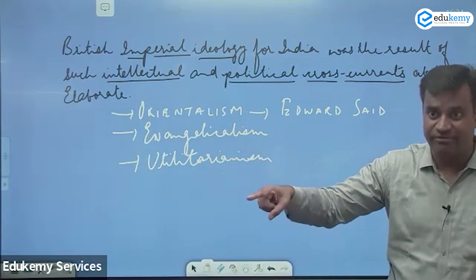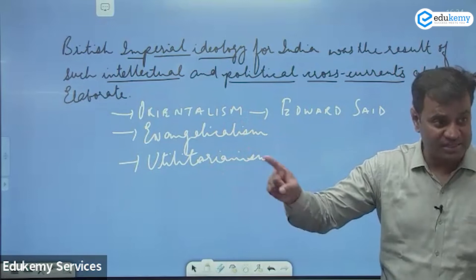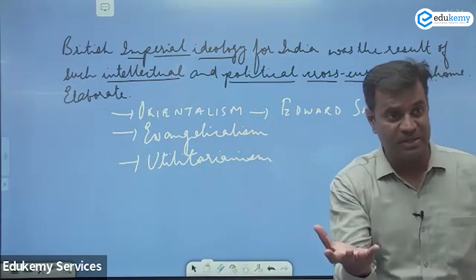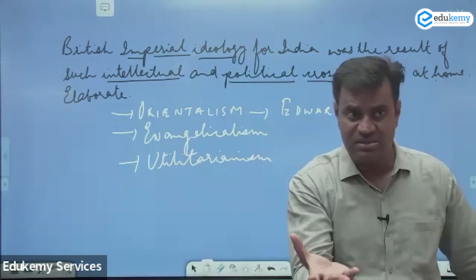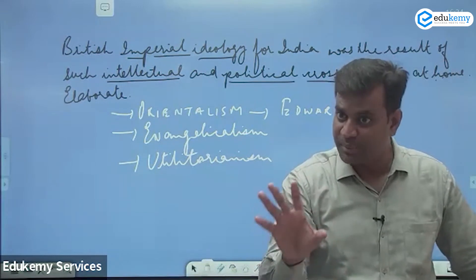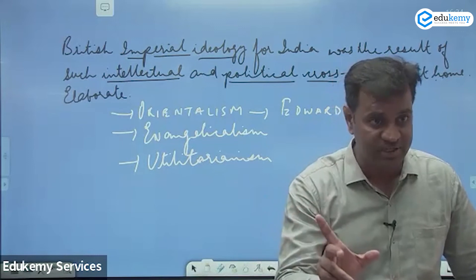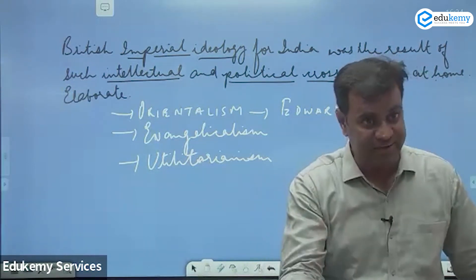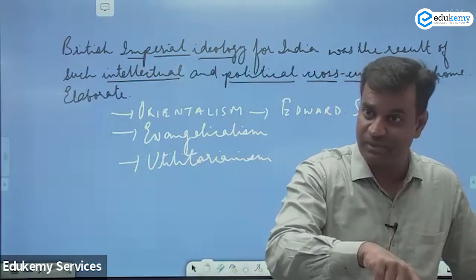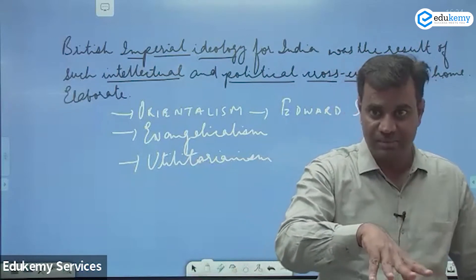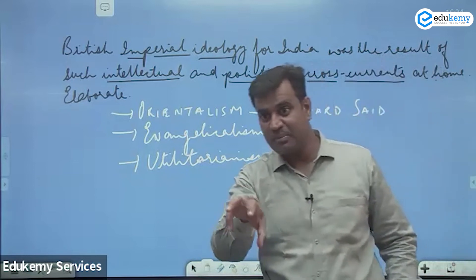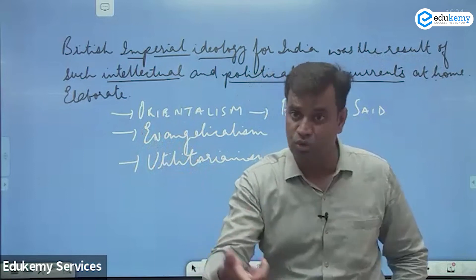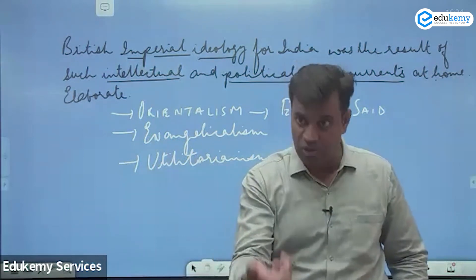Permanent Settlement was marked by economic defects. The real beneficiaries were the Zamindars, not the British — that is why Permanent Settlement is also known as Zamindari Settlement. After realizing the mistakes of Permanent Settlement, the British came out with another settlement known as Ryotwari Settlement in Bombay and Madras, because a major part of revenue under Permanent Settlement went to the Zamindars.